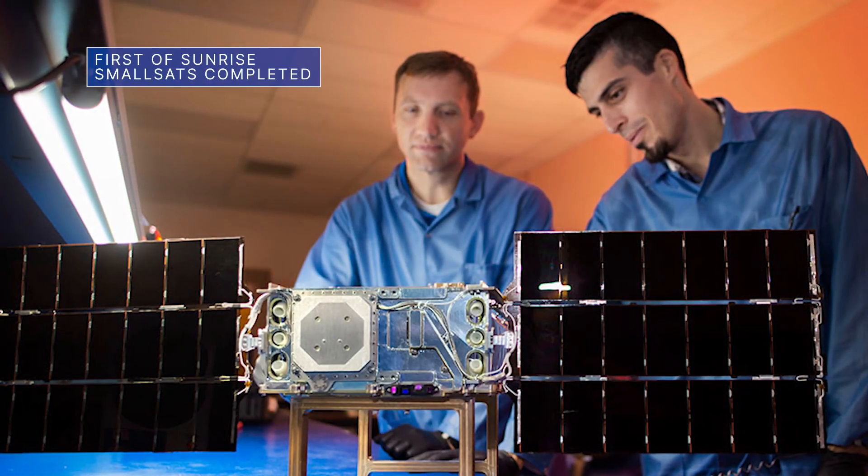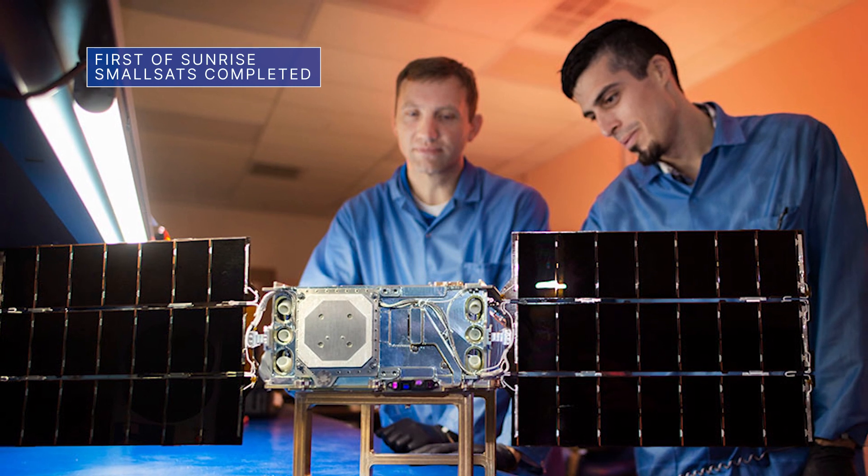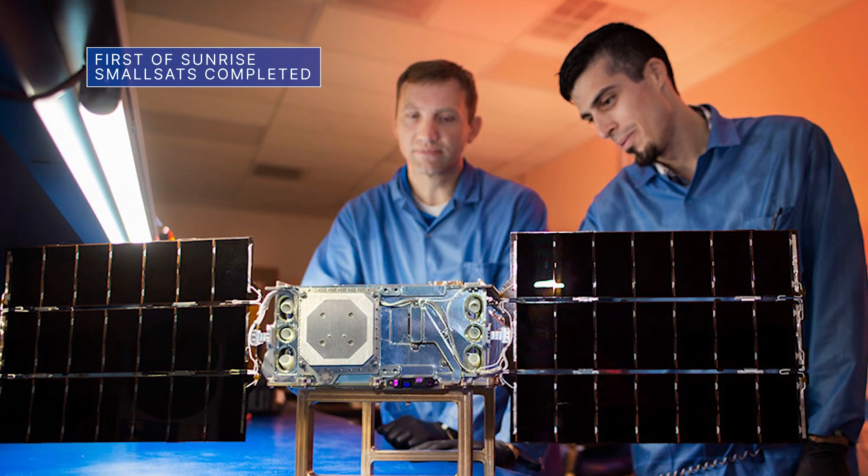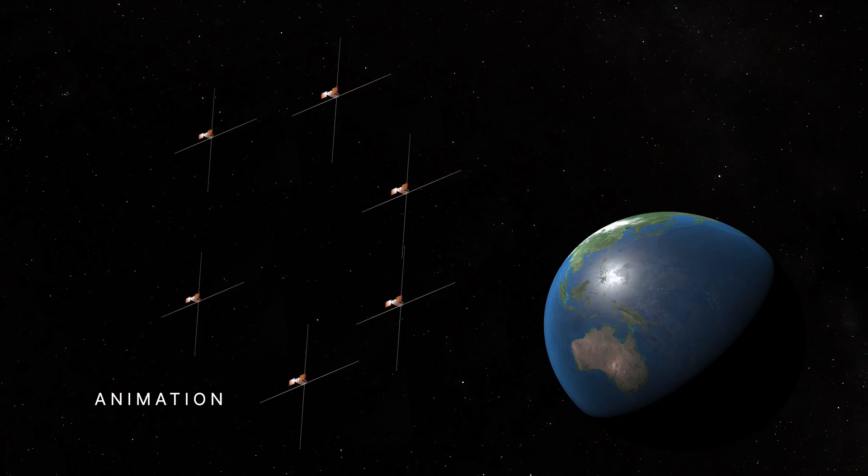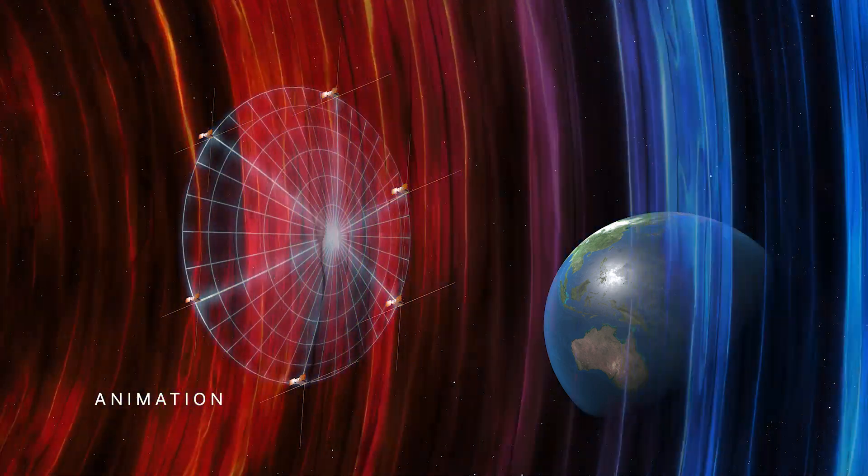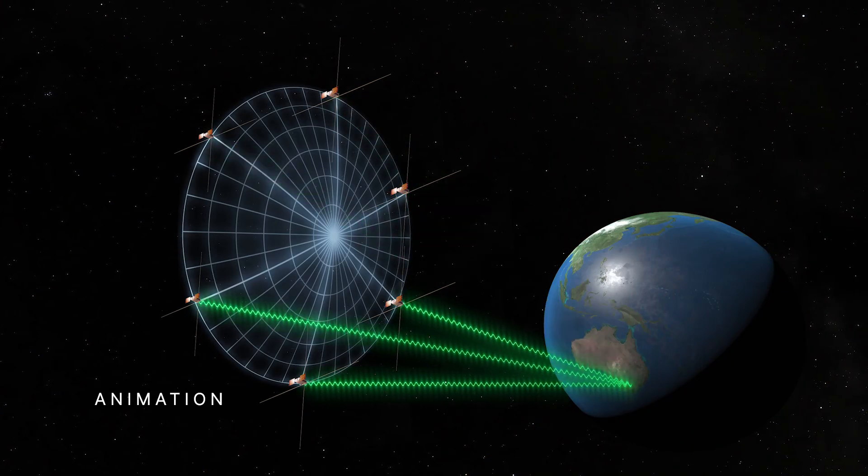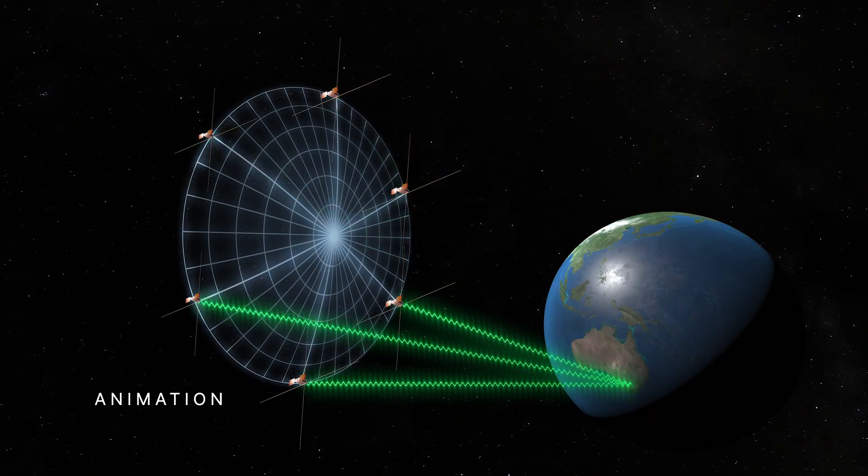The first of six toaster-sized satellites for our Sun Radio Interferometer Space Experiment, or Sunrise, has been completed. The tiny satellites will combine to form a six-mile-wide telescope in space, capable of detecting bursts of radio waves from the Sun's superheated atmosphere, known as the corona.